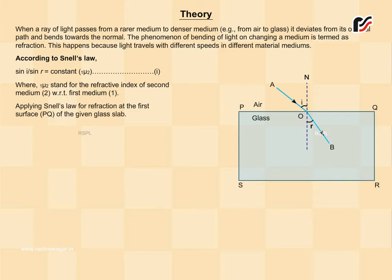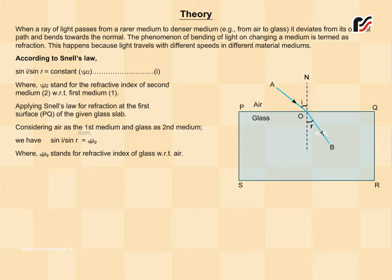Considering air as the first medium and glass as second medium, we have sin i upon sin r equals ₐμ_g, where ₐμ_g stands for refractive index of glass with respect to air.